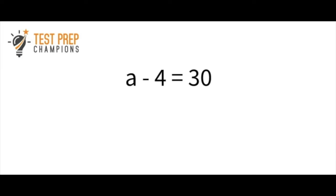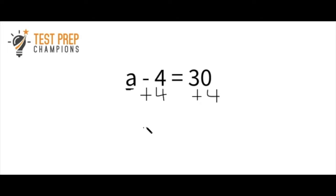The next question: a minus 4 equals 30. Pause the video and try to figure this out. What we want to do is get the variable by itself on one side of the equation. Since it's a minus 4, we have to do the opposite operation of subtraction, which is addition. Whatever we do to one side, we also have to do to the other. We add 4 to 30, and our answer is a equals 34.